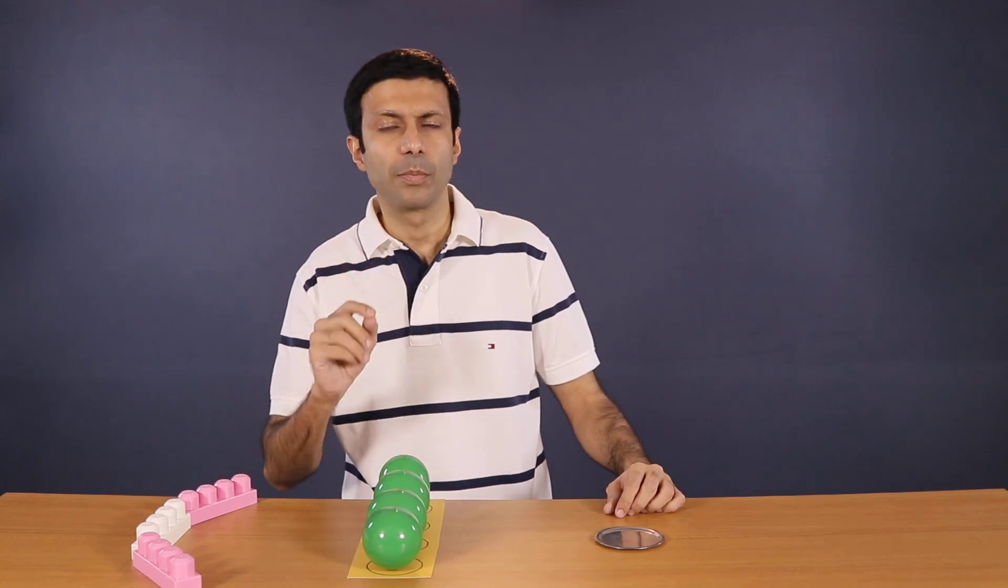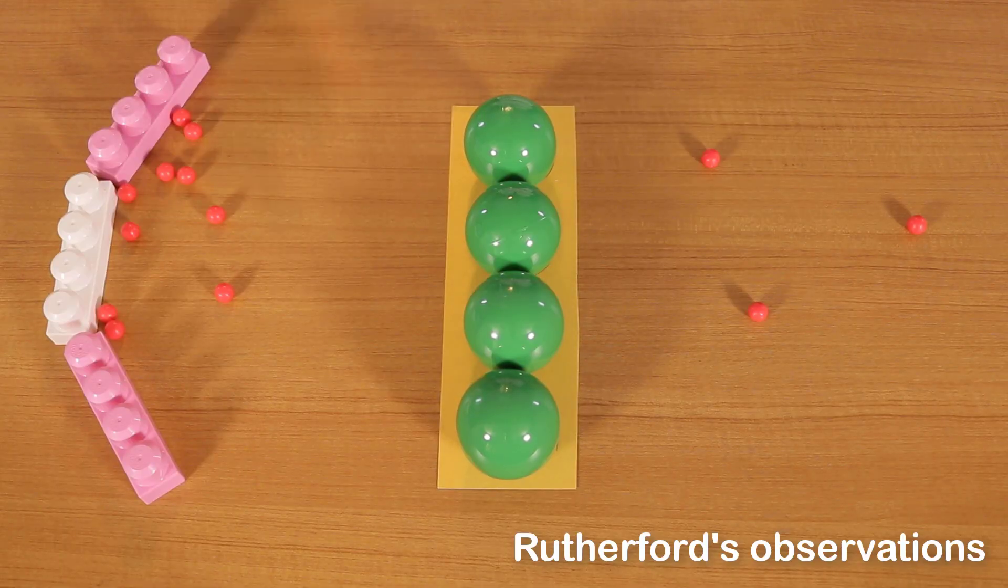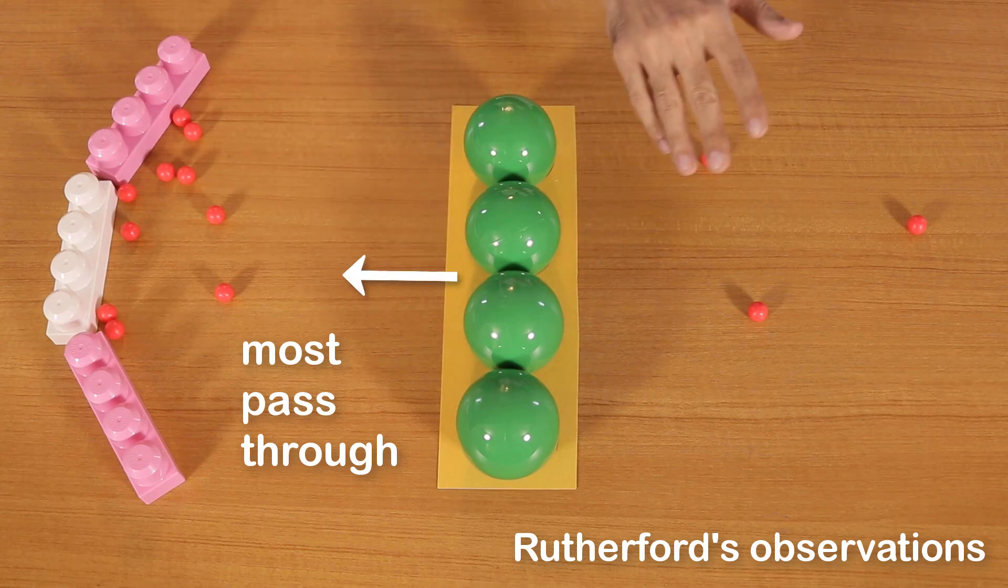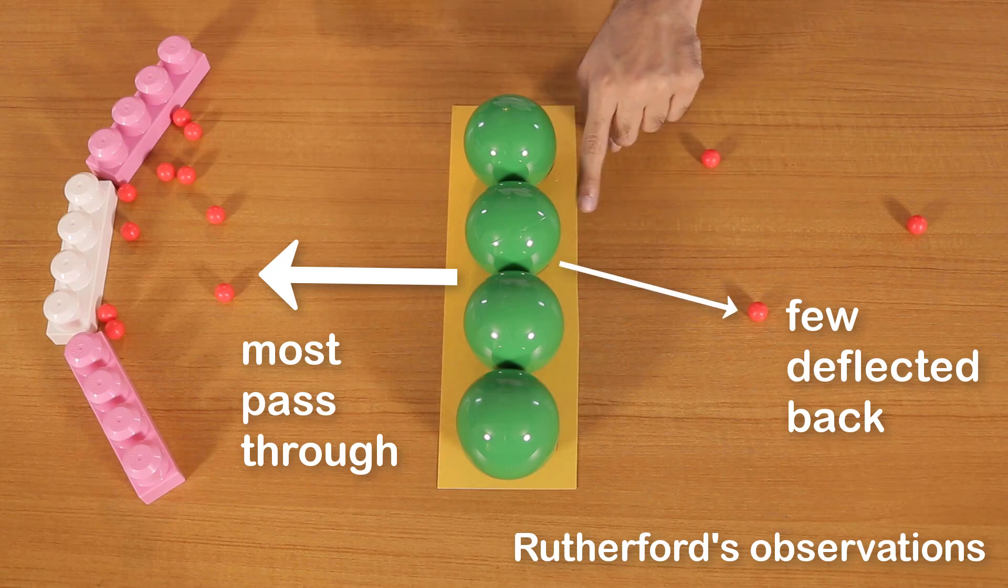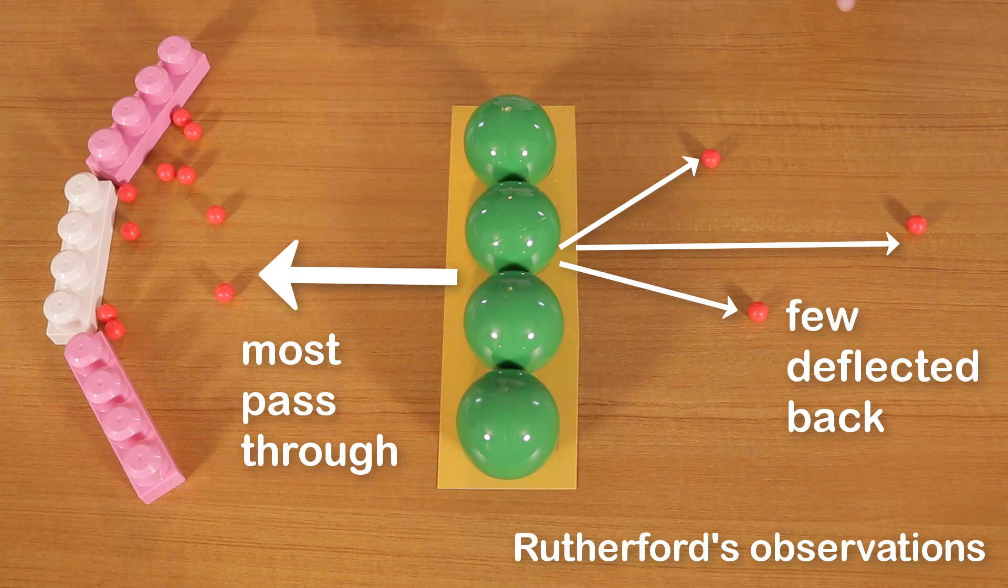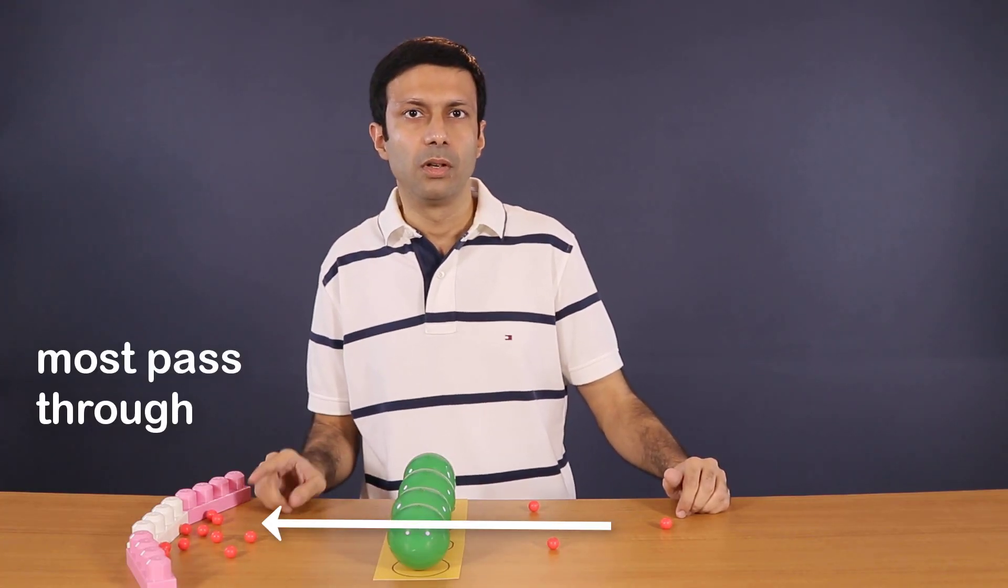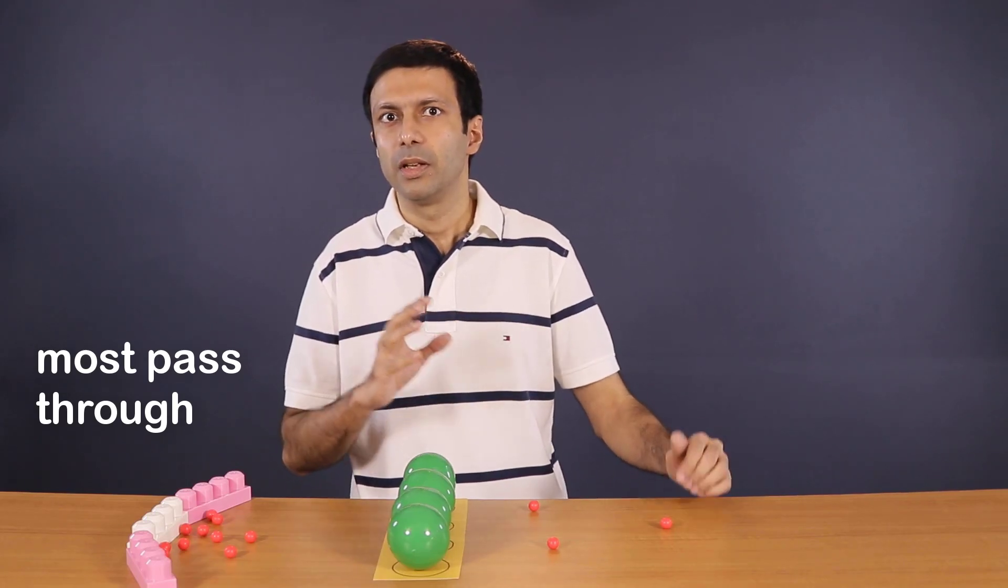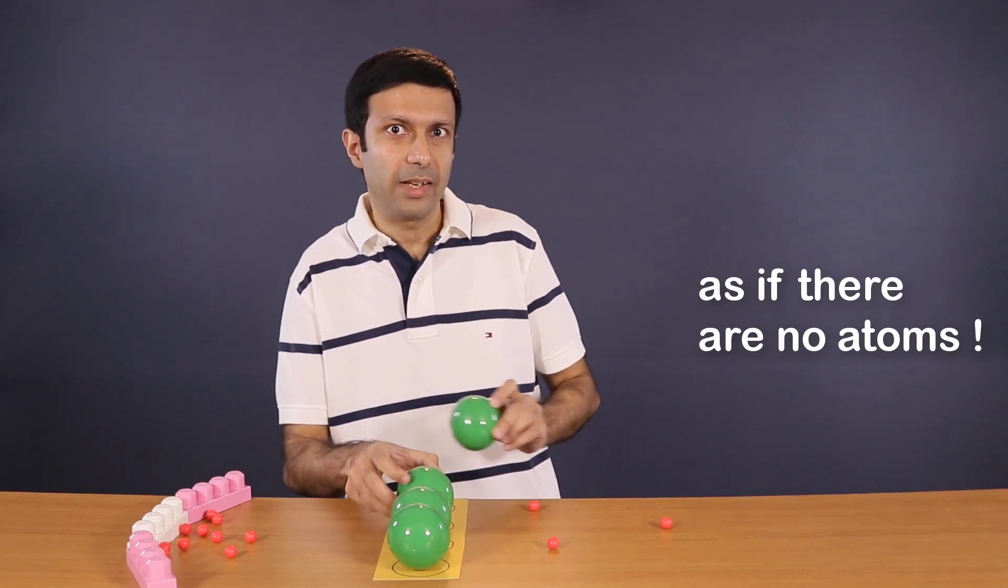As expected you saw that most of them get deflected away or get rebounded back. Rutherford and his students also expected the same. But what were their observations? Exactly the opposite. Their observations were that most of the alpha particles passed straight through, undeflected. It's almost as if the gold foil is empty, as if there are no atoms in there. So I'm going to go ahead and remove these atoms.